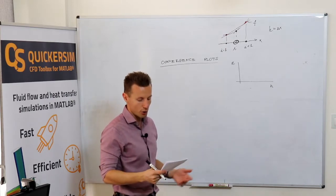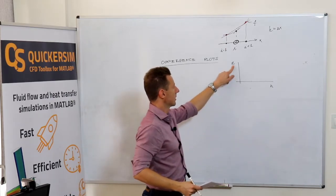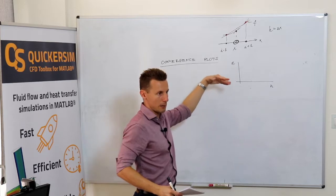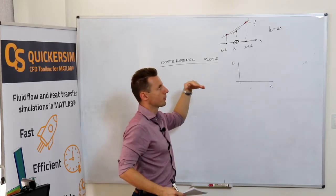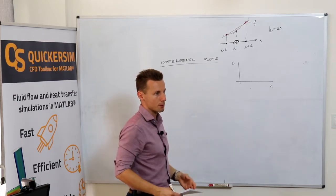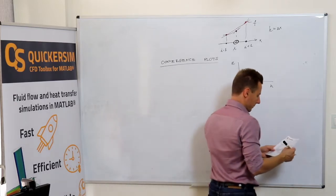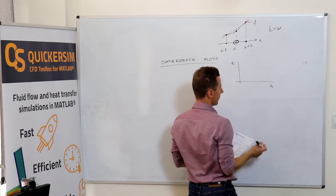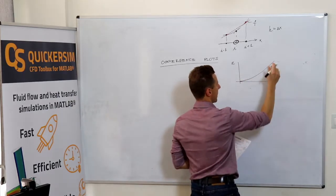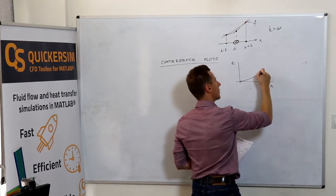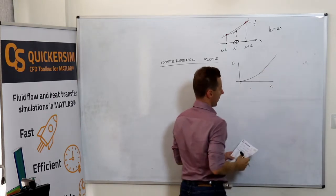Some kind of error norm that exists between the correct solution and the numerical solution that you get. But usually for a good method, this error plot would look something like that.